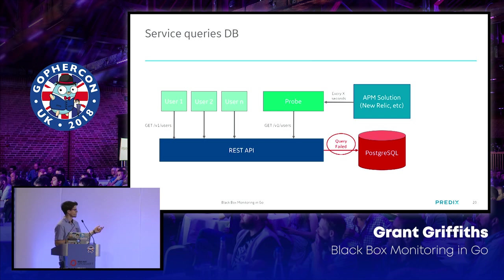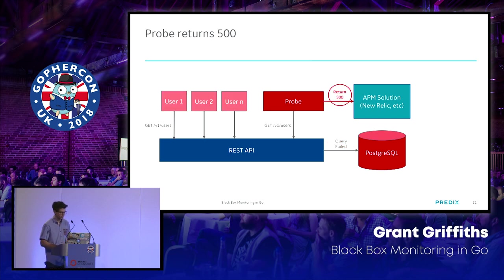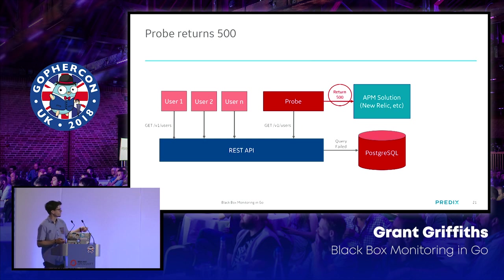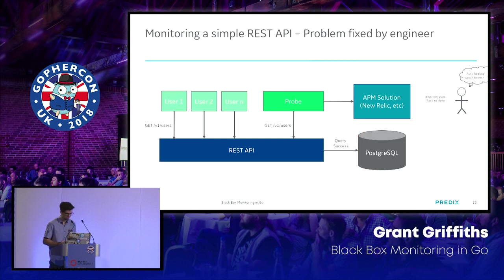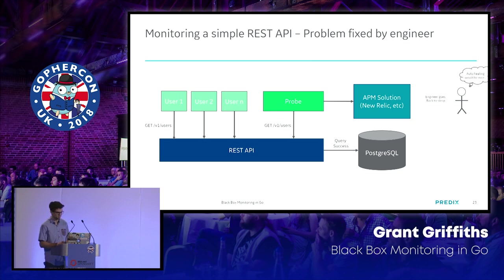Let's say we're monitoring this REST API and the probe hits the users endpoint and the query fails. The probe catches the error first because it's running continuously, and then all other users face the same issue. Potentially Postgres is down, or there's a connectivity issue — perhaps someone messed up security groups and you can't hit your Postgres. You'll have to page an engineer through your APM solution or directly via the PagerDuty API. The engineer wakes up, fixes the problem, and goes back to sleep dreaming about auto-healing systems.